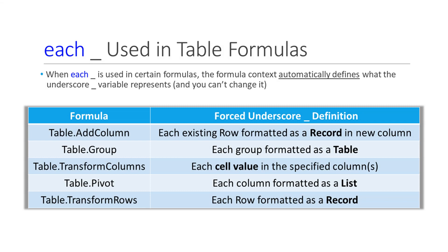To facilitate calculations, each underscore can be used in certain formulas. However, the formula context automatically defines what the underscore variable represents, and you cannot change this. These five M language formulas are the ones most commonly used with the each underscore notation. When using Table.AddColumn, the underscore represents each existing row formatted as a record. When using Table.Group, the underscore represents each group formatted as a table. When using Table.TransformColumns, the underscore represents each cell value in the specified columns. When using Table.Pivot, the underscore represents each pivoted column formatted as a list. And finally, when using Table.TransformRows, the underscore represents each row formatted as a record. We'll now look at each of these formulas in more detail.